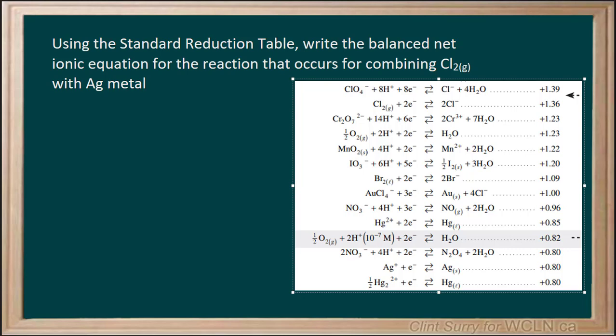So we're going to look at the standard reduction table here and see where these species are. Now remember, we're given chlorine gas, which you'll find up here on the table, and silver metal. So this is not the ion version of silver, but the metal version of silver.